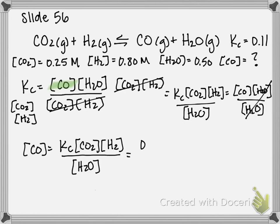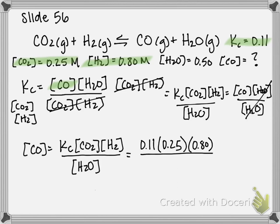Now that I have it rearranged, I can plug in all my values. It's going to be 0.11 — the Kc value given at the start — times the concentration of CO₂, which is 0.25, times the concentration of H₂, which is 0.8, over the concentration of H₂O, which is 0.5. Multiplying and dividing all of that, you should get that the concentration of CO is 0.044 molar. That is your final answer.